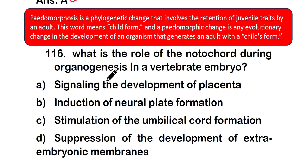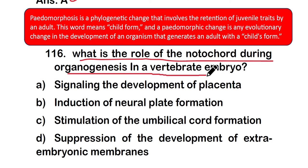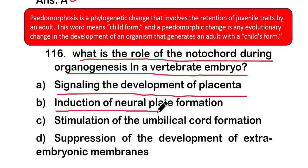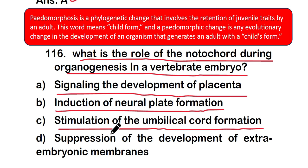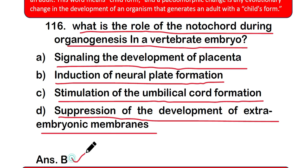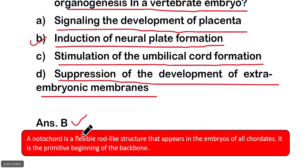Question 116: What is the role of the notochord during organogenesis in a vertebrate embryo? (a) signaling development of the placenta, (b) induction of neural plate formation, (c) stimulation of umbilical cord formation, or (d) suppression of extra-embryonic membranes. The correct answer is option B — induction of neural plate formation. The notochord is a flexible rod-like structure in the embryo of all chordates and is the primitive beginning of the backbone.